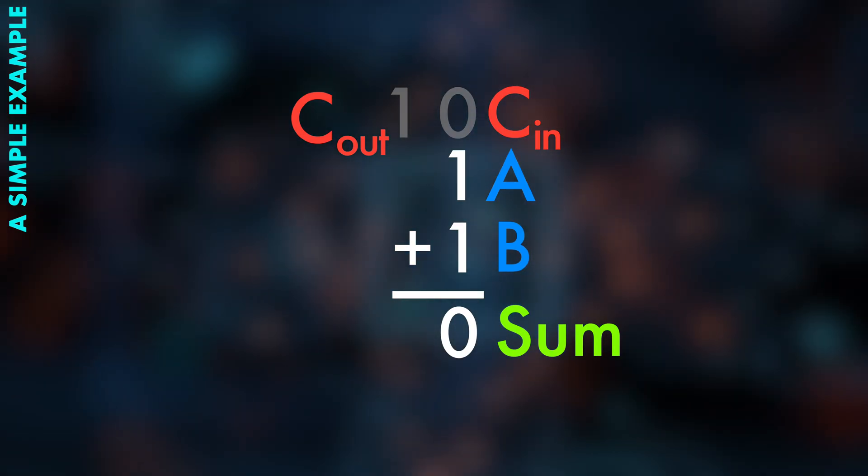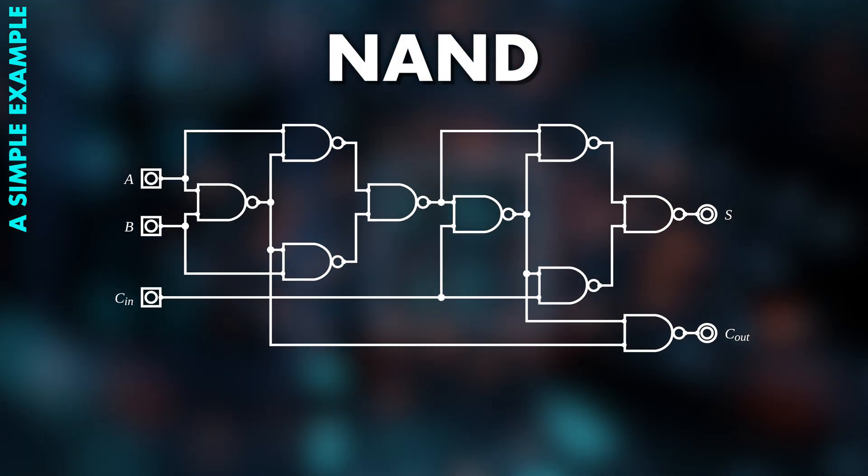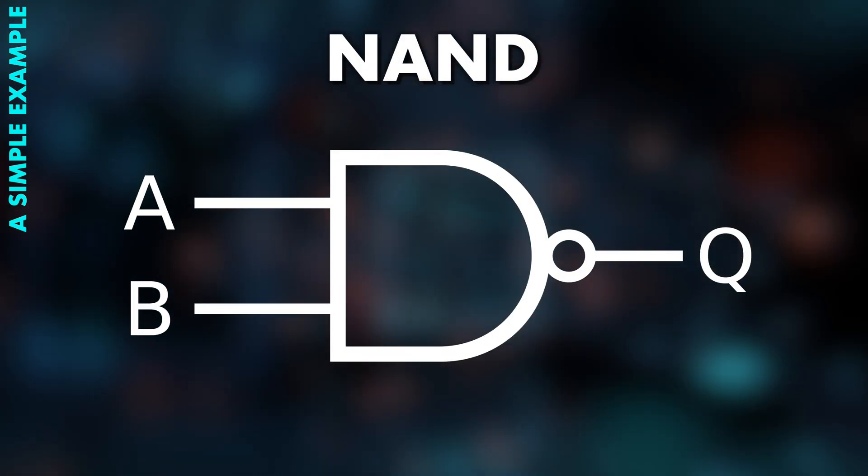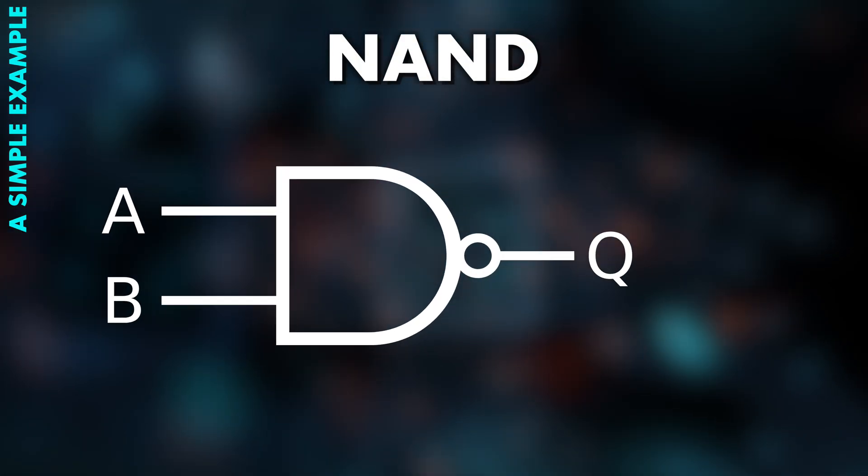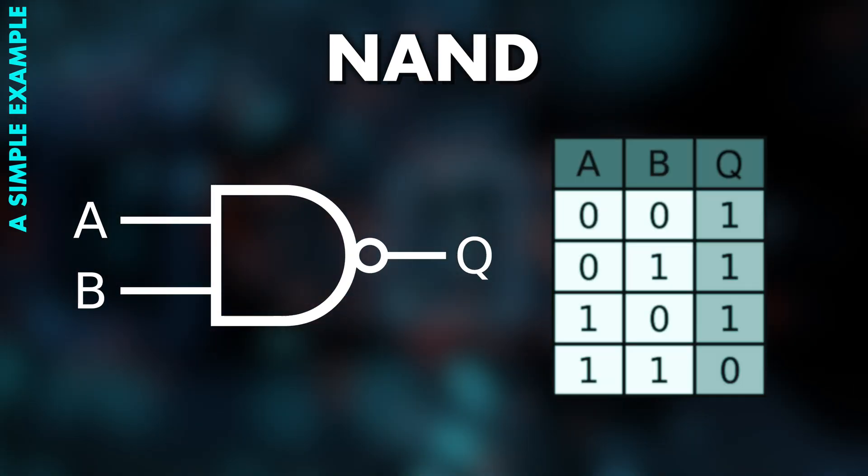All of that can be performed by this circuit, for example, consisting entirely of NAND operations. NAND means not AND, and it is a logic gate that produces a single output for two inputs. Now, the details here aren't super important,